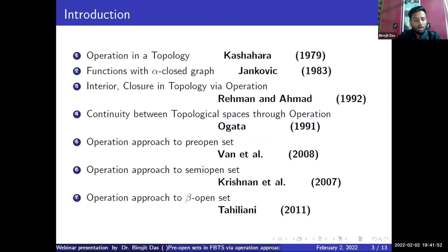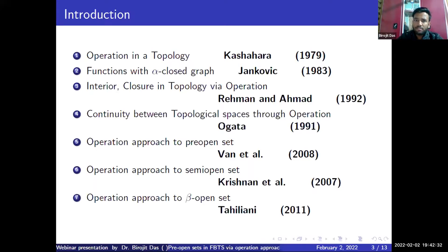The concept of operation in a topological space was first introduced by Kashara back in 1979. Throughout the next decade, several researchers devoted their study to extending or developing results on operation approaches. Jankovic in 1983 introduced alpha-closed graphs via operation approach, and via operation approach, open sets were introduced. Rehman and Ahmad introduced the concept of interior and closure of those sets via operation approach in topological spaces. Theoretical applications were shown by researchers like Wagata and others.